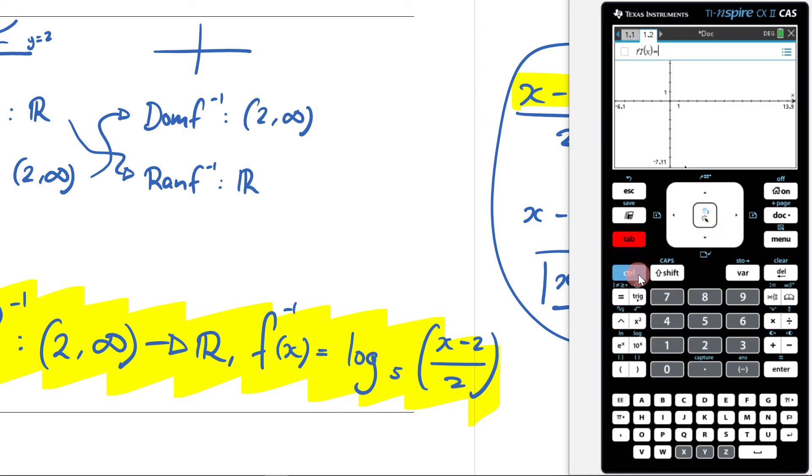Let's go tab, let's go control log, let's go a base of 5, and then this, x minus 2, close brackets, divided by 2.